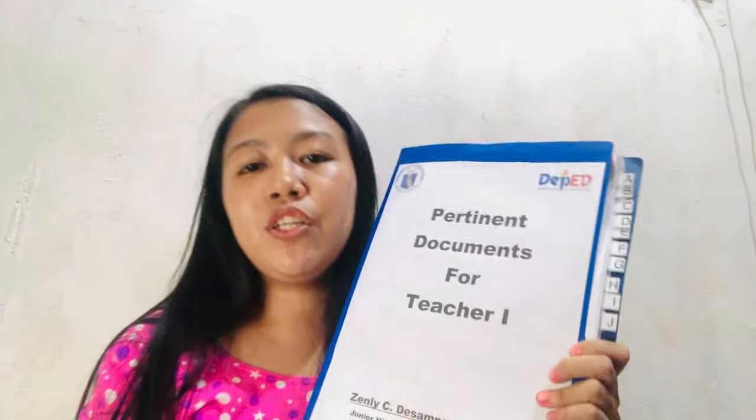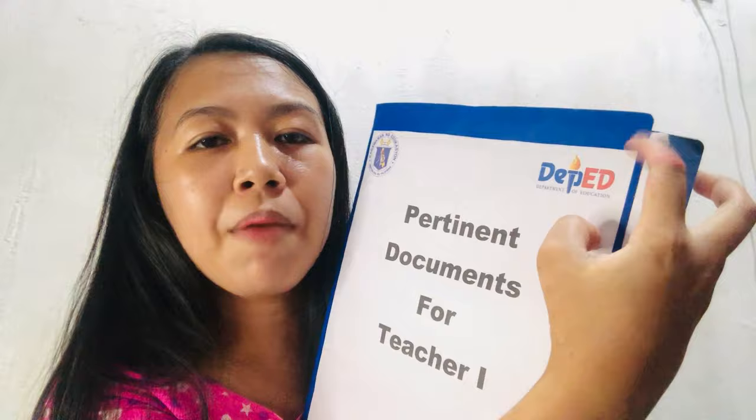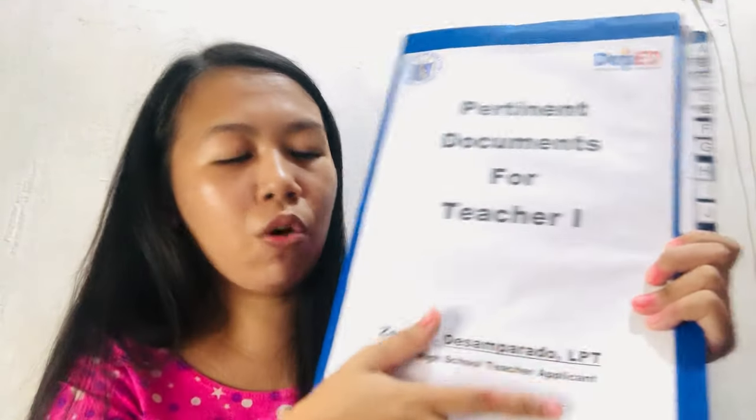That's all I can share about the pertinent documents for Teacher One. This is actually printed on paper and I cut and paste it on the front of this blue folder. The division I applied to requires junior high school teacher applicants to use a blue folder, while senior high school and elementary use different colors. I also attach my contact number on the front so they can reach me more easily.